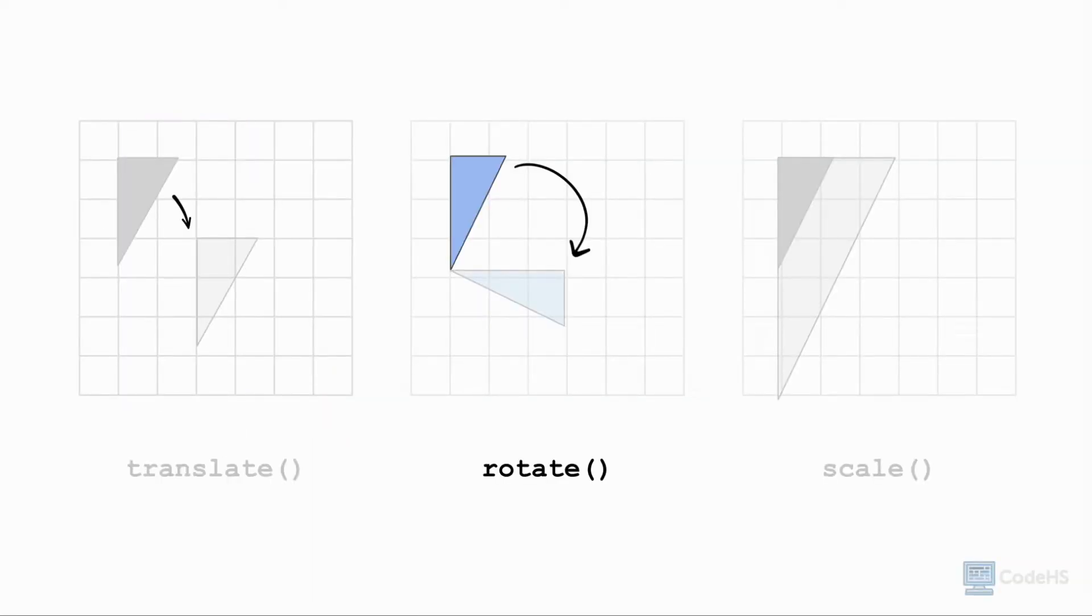Rotation is when we rotate a shape by a certain angle. To rotate a shape in p5.js, we use the rotate function.